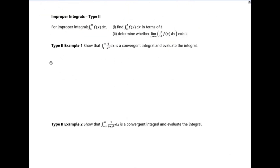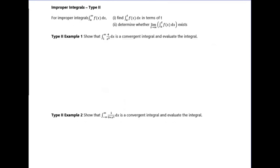The second type of improper integrals are those with infinity as one or both limits. You do the same thing: replace the infinity sign with the letter t, do the integration, and then at the end take the limit as t tends to infinity.